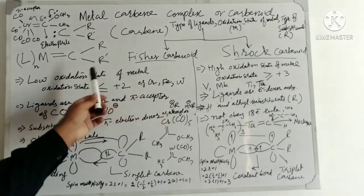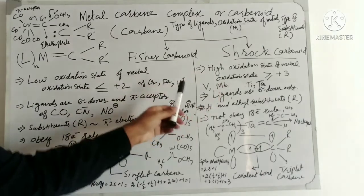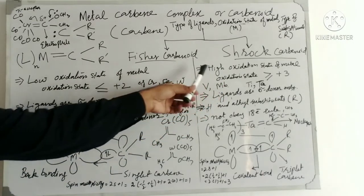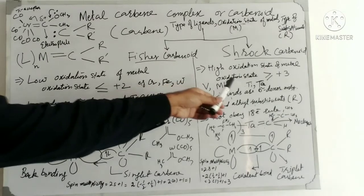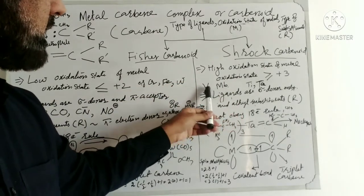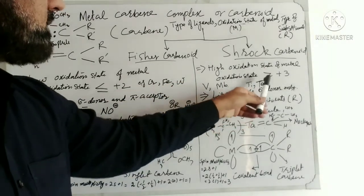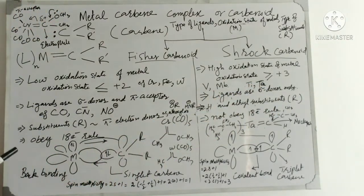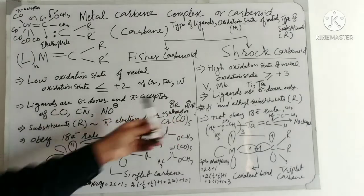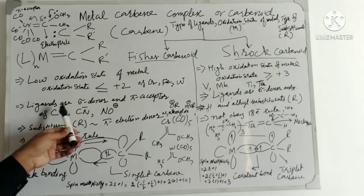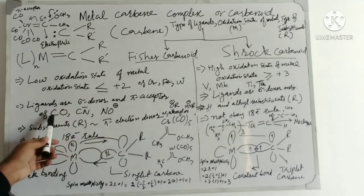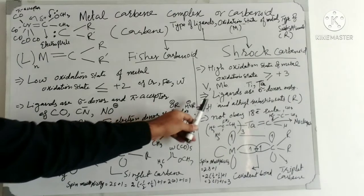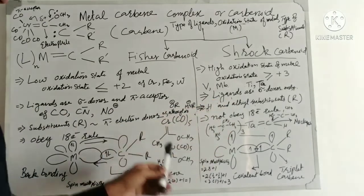In the case of Schrock Carbenoid, the metal is in a high oxidation state — normally greater than plus three. In Fischer Carbenoid, the ligands are sigma donors and pi acceptors; these are examples of such ligands. In the case of Schrock Carbenoid, the ligands are sigma donors only.